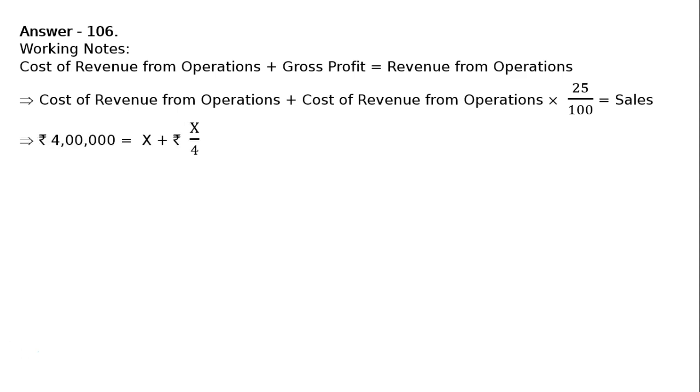Now, substitute the values. Sales is Rs. 4 lakh. Take cost of revenue from operations as x and make it x plus x by 4. That is equal to Rs. 4 lakh, which equals 4x plus x by 4.